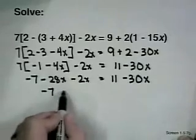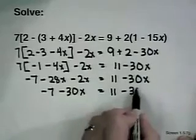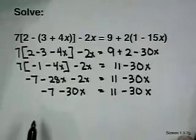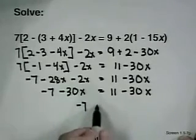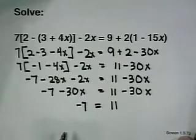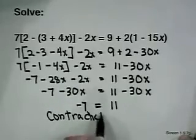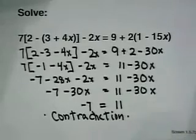Negative 7 minus 30x equals 11 - 30x. Perhaps you can see right now that this is going to be a contradiction. Adding 30 to both sides gives us the obviously false statement that negative 7 is equal to 11. So this is a contradiction, and there is no solution to this particular problem.